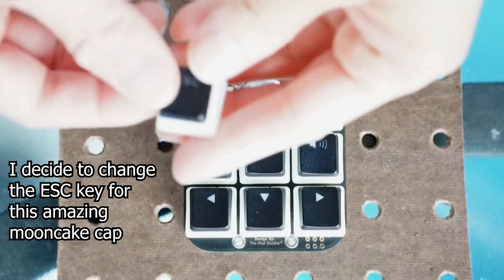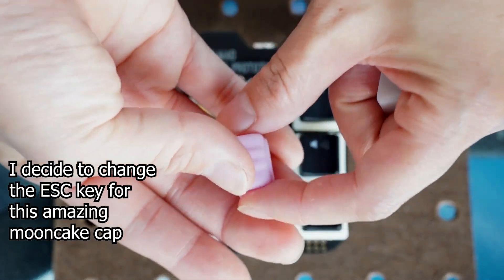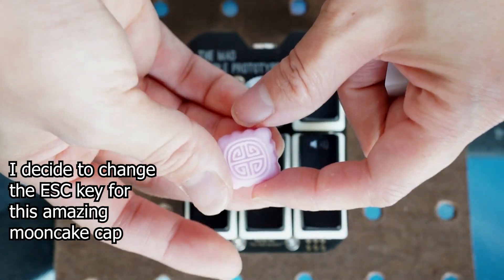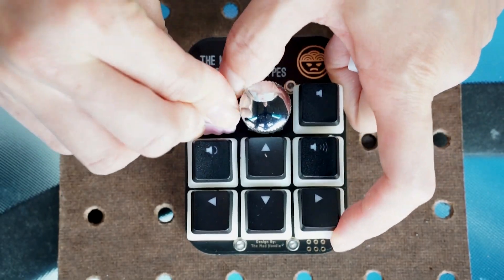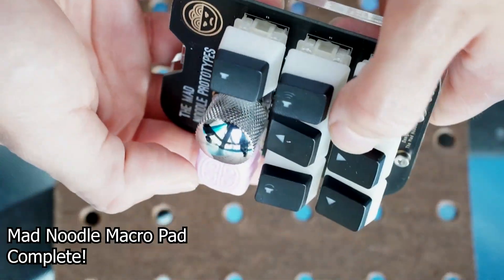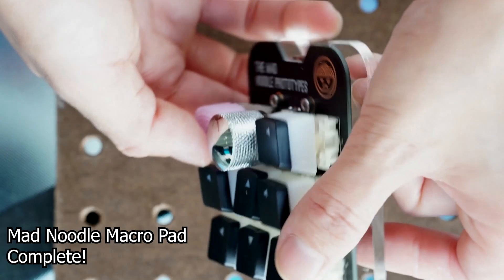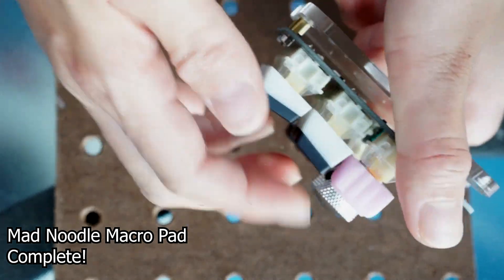And you're going to see here in a second. So the one I have is a purple mooncake keycap I got from Canada. And there we go. The special Mad Noodle macro pad is complete. I highly recommend it if you want to start soldering, want to have a mini macro pad. Bye.